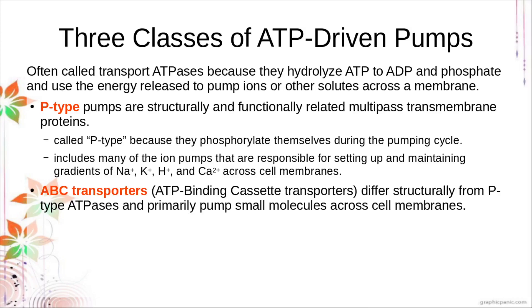We also have ABC transporters — ABC stands for ATP-binding cassette transporter. They are structurally different from P-type ATPases and their usual activity is to pump small molecules across cell membranes. ABC transporters are actually a headache for drug designers, because cancer cells have very active ABC transporters that pump small molecules — including anti-cancer drugs — out of the cancer cell. That is how cancer cells are able to subsist even in the presence of very strong drugs: they develop ABC transporters that pump out the anti-cancer drug.